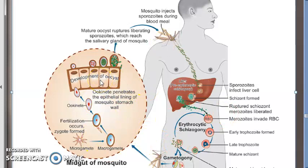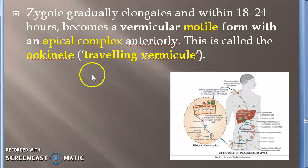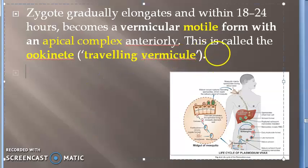The mosquito's stomach provides the right temperature and conditions for fertilization. So the sexual life cycle is completed in the midgut of the mosquito — that is what you have to write. The traveling vermicule referred to here is the ookinete.